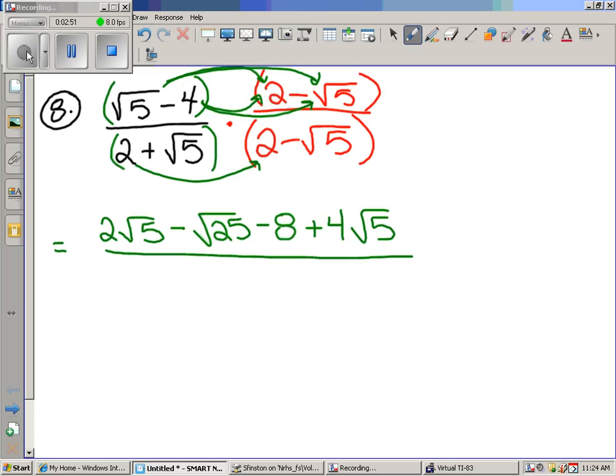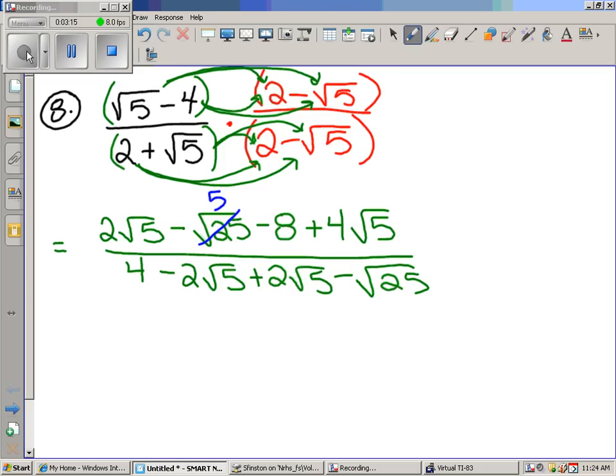Let's do the bottom. Two times two is four minus two square root five plus two square root five minus the square root of 25. Now I don't feel like rewriting the problem over again, so I'm going to reduce my work using what I've gotten written up. The square root of 25 is five. Square root of 25 over here is five. And now let's just reduce.